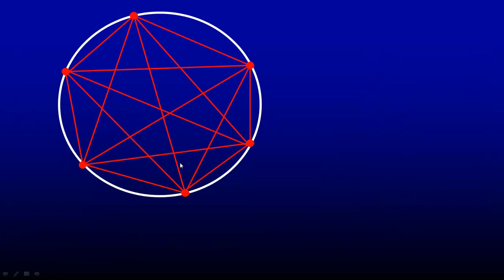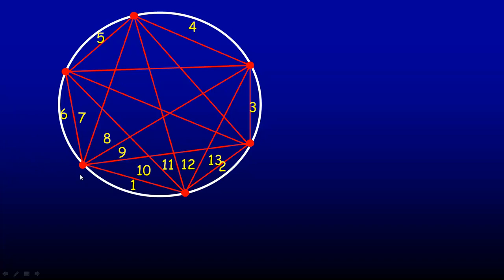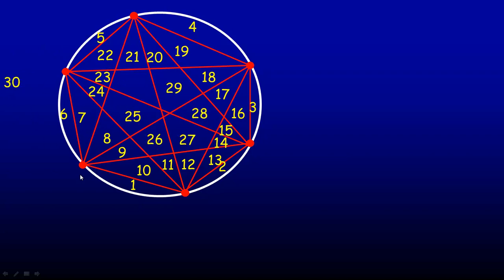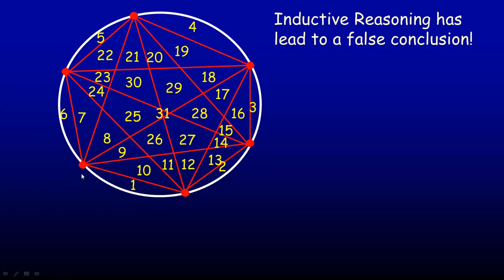So we're actually going to do it. Here are six points — one, two, three, four, five, six — and we're going to count the regions. There's no trick here. If you count them, there are not 32 regions — it's actually 31. Very close. So the inductive reasoning has led us to a false conclusion. That doubling was true the first several times, but it's not true for this case.